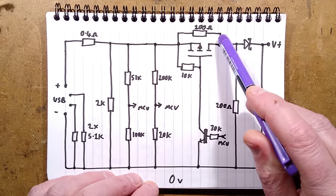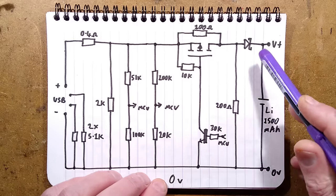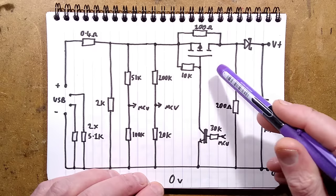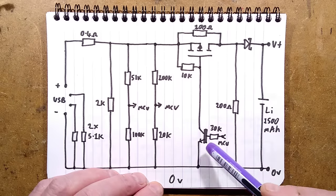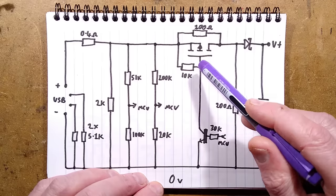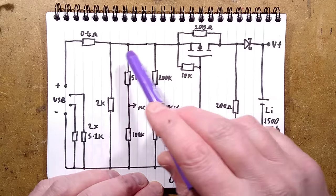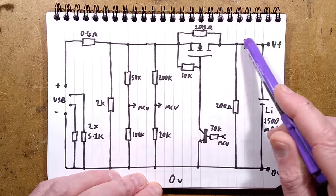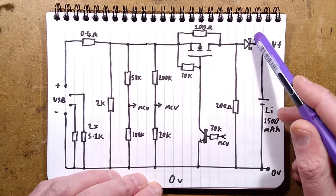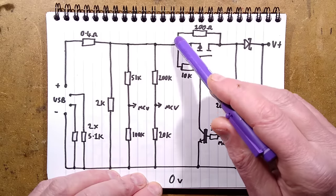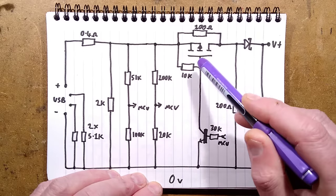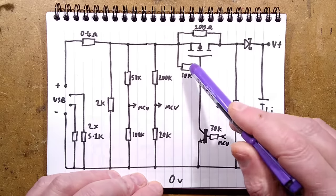So, when the processor wants to turn on charging, it turns on this little NPN transistor, which pulls the gate of this MOSFET down to the zero volt rail, and that turns it on, and current can flow from the charging circuit into the lithium cell via this Schottky diode. There is a 100 ohm bypass resistor. Initially, I was thinking that's odd, because it means when the MOSFET's turned off, technically speaking, it could keep charging current into the lithium cell and could overcharge it.